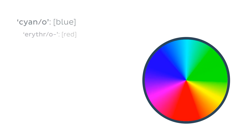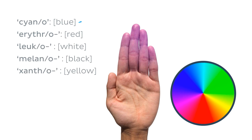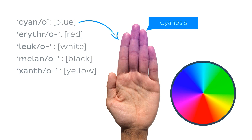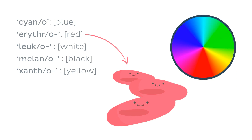Prefixes can also denote the appearance of something, for example its color. 'Cyano' denotes the color blue, as in cyanosis — a bluish discoloration of skin due to poor circulation or oxygenation of blood. Or 'erythro,' which means red, as in erythrocyte — a red blood cell.